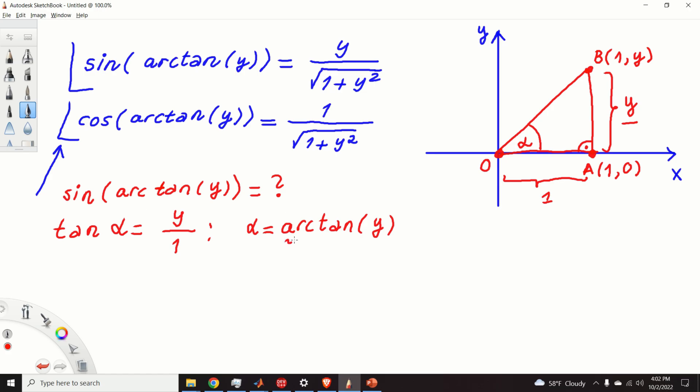Now, here we have arctan(y), and here we are having arctan(y). So, what we need to find, we need to find the sin(alpha), since alpha is equal to arctan(y). And, again, by looking at this triangle,